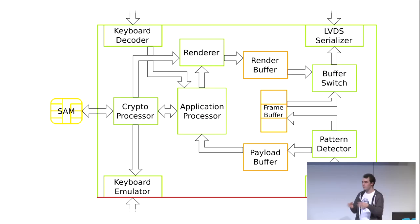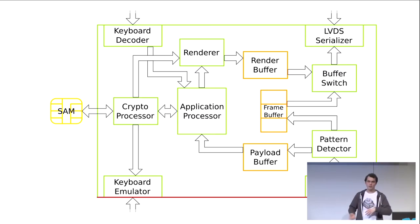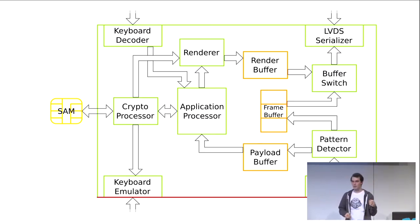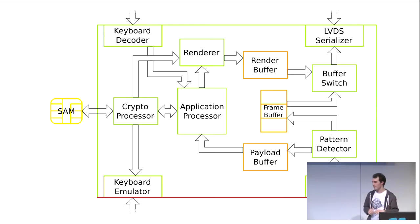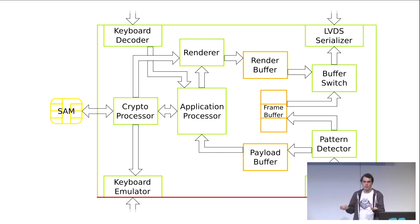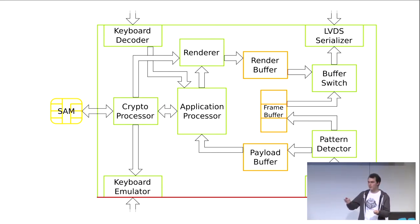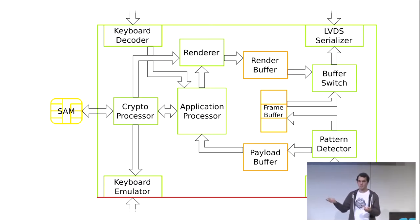The renderer would be basically another processor, probably running something like FreeType, converting UTF-8 input into pixel data — which, as it turns out, is a really complex problem. The renderer outputs a bitmap into a render buffer, and this render buffer is then dynamically switched into the in-flight LVDS or embedded DisplayPort signal by the buffer switch. The buffer switch just needs the position where to flip between upstream display content and the render buffer, counting the X and Y coordinates, then switching over and back.